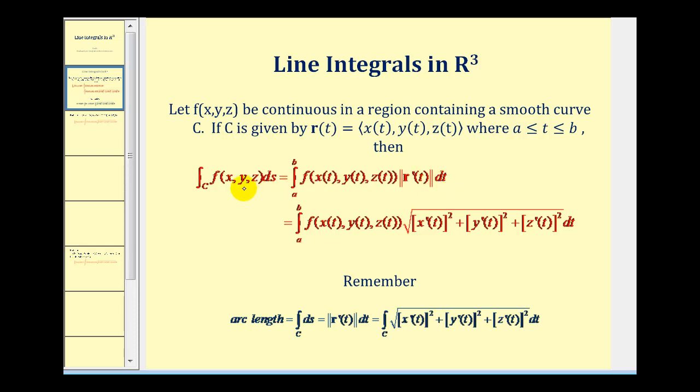We first convert the function f of x, y, z into a function of t by replacing x with x of t, y with y of t, and z with z of t from the components of the space curve. And then we replace differential s with the magnitude of r prime of t dt.